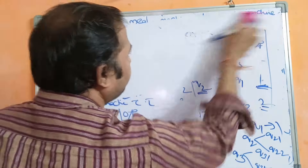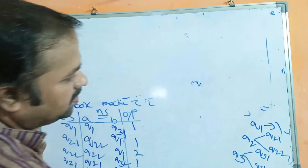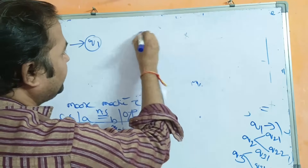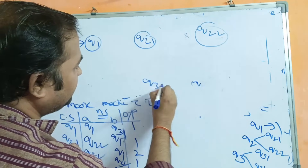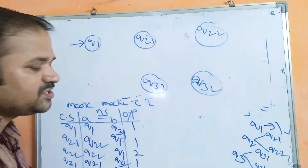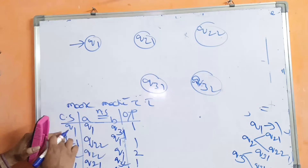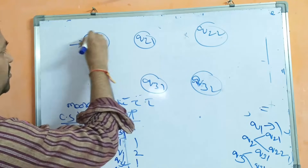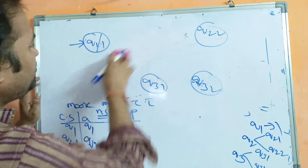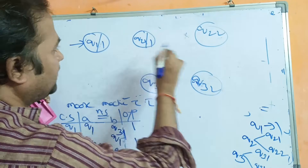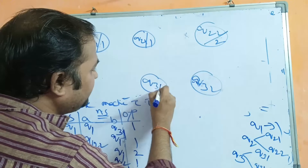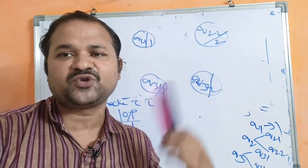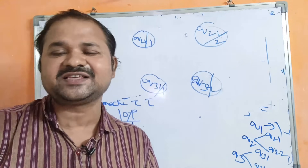Now let us draw the transition diagram based on the Moore machine transition table. The states are Q1 (starting state), Q2-1, Q2-2, Q3-1, and Q3-2. In Moore and Mealy machines there are no final states. In Moore machine the output is written inside each state, since output depends only on the state: Q1 output 1, Q2-1 output 1, Q2-2 output 2, Q3-1 output 1, Q3-2 output 2.